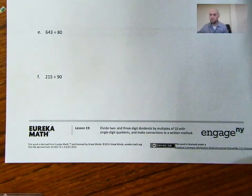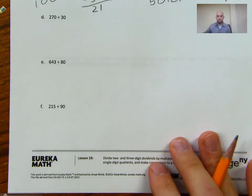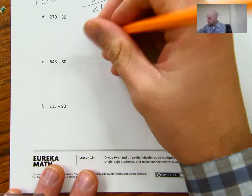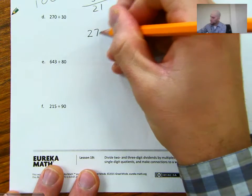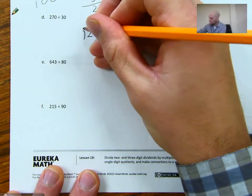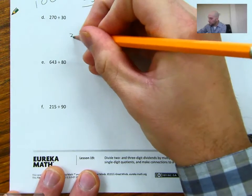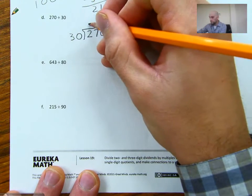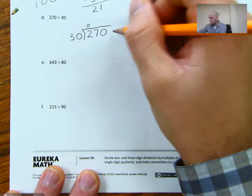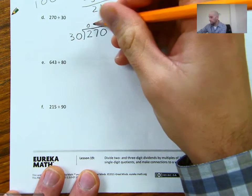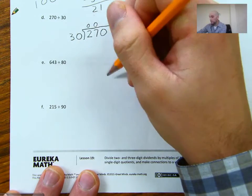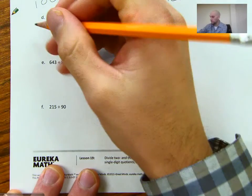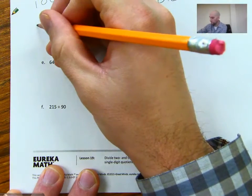All right, so let's look at the letter D. We have 270 divided by 30. So we've got 270 divided by, and then 30 on the outside. 30 can't go into 2. 30 can't go into 27. 30 can go into 270, but we don't know how many times. So we need to make ourselves a factor tree here.